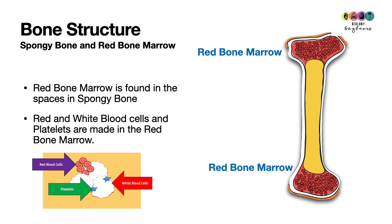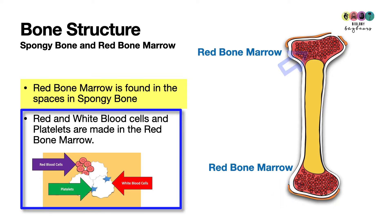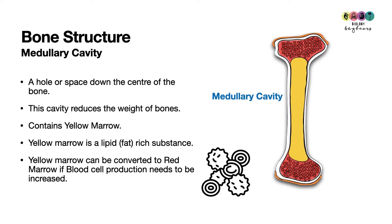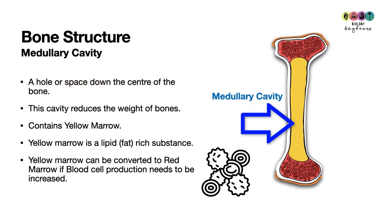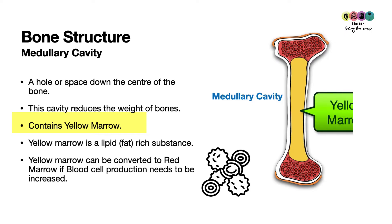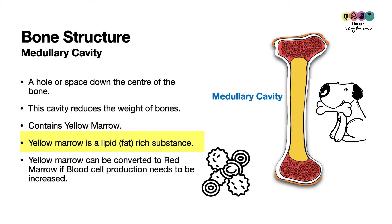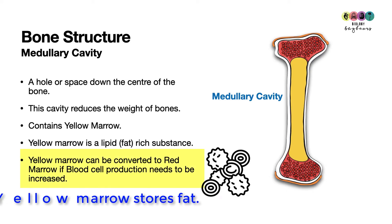In the spaces of the spongy bone is where you find red bone marrow, which is where red and white blood cells and platelets are made. Running through the middle of the diaphysis is a cavity known as the medullary cavity, which reduces the weight of the bones. Yellow marrow — a lipid- or fat-rich substance — is found inside this medullary cavity. Yellow marrow is important because it can be converted into red marrow if more blood cells need to be produced.